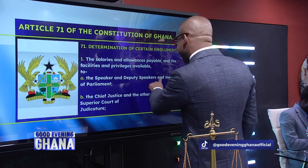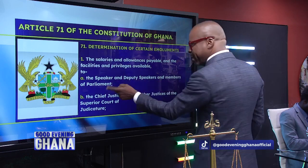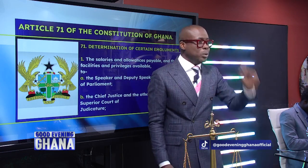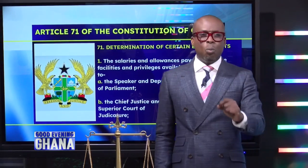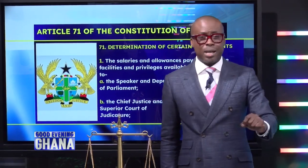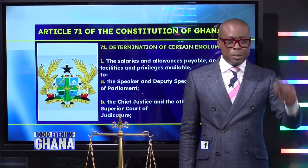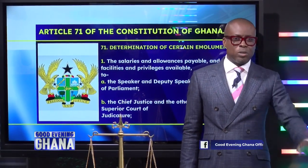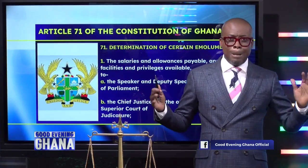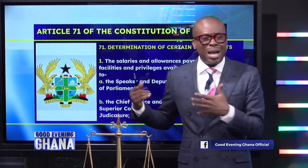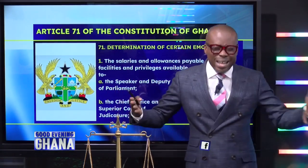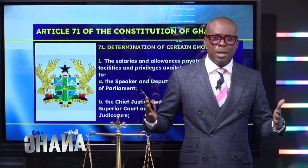Here they are: the Speaker and Deputy Speaker and members of Parliament. So we have to determine, once and for all, what the salary of the Speaker should be, the Deputy Speaker should be, members of Parliament should be — and we don't just change it arbitrarily. We equate it to the dollar, because Article 71 is there so that we can manage our finances. That's the purpose.